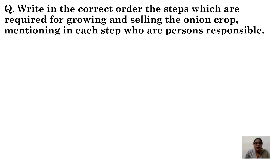The next question is: write in the correct order the steps which are required for growing and selling the onion crop, as discussed in this chapter. We have to describe all the steps from growing the crop to selling it in the market, including every family member responsible — Baswa's father and all other family members who followed each step.